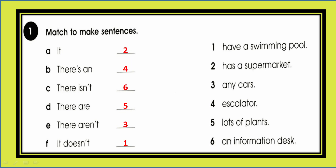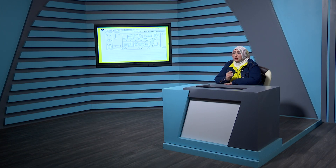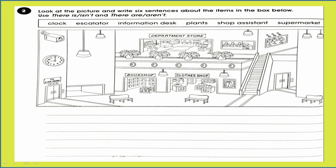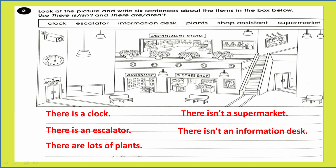Exercise two: look at the pictures and write six sentences about the items in the box below. Use 'there is/isn't' and 'there are/aren't'. The words are: clock, escalator, information desk, plants, shop assistant, and supermarket. Answers: 'there is a clock', 'there is an escalator', 'there are lots of plants', 'there isn't a supermarket', 'there isn't an information desk', 'there isn't a shop assistant'.